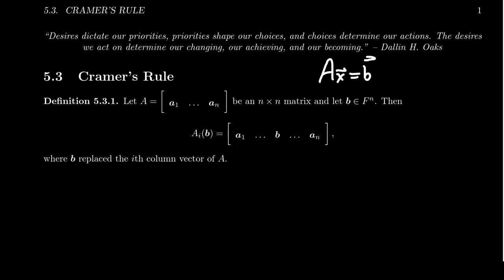Before we get to that, where A is n by n, a square matrix, we're going to define an n by n matrix A_i(b), where A_i(b) is just identical to A. You'll have a_1, a_2, a_3 all the way up to a_n.